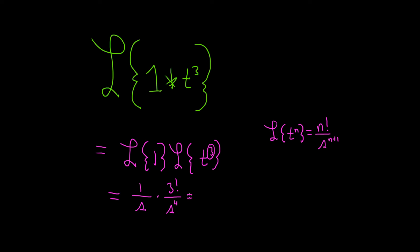Now we can finish by simply working this out. So we have 1 over s times 3 factorial is 6, so we have 6 over s to the 4th.